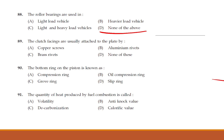Clutch facings are usually attached to the plate by: copper screws, aluminium rivets, brass rivets, or none of these. The answer is option C — brass rivets.